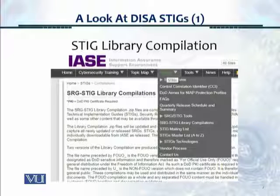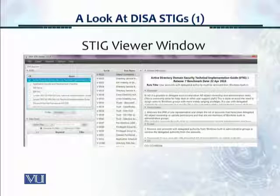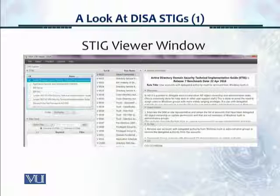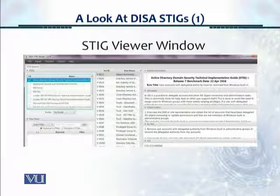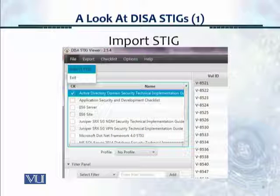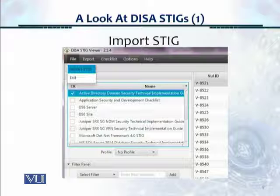This screenshot shows the STIG library compilation. You go to STIGs and can see SRG STIG library compilations in the middle. If you activate the STIG viewer, it opens a Java file and a screen pops up on your workstation. It shows the STIG with a vulnerability ID section in the middle, and on the right side it has information related to the controls. Once you've opened the STIG viewer, you can import a STIG — either individual STIGs or the entire library.